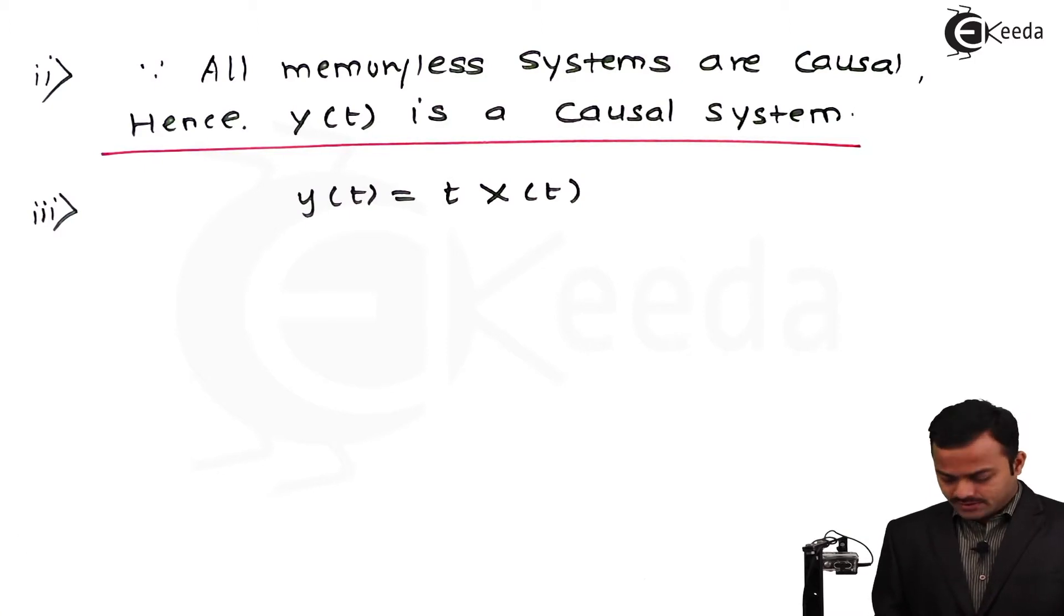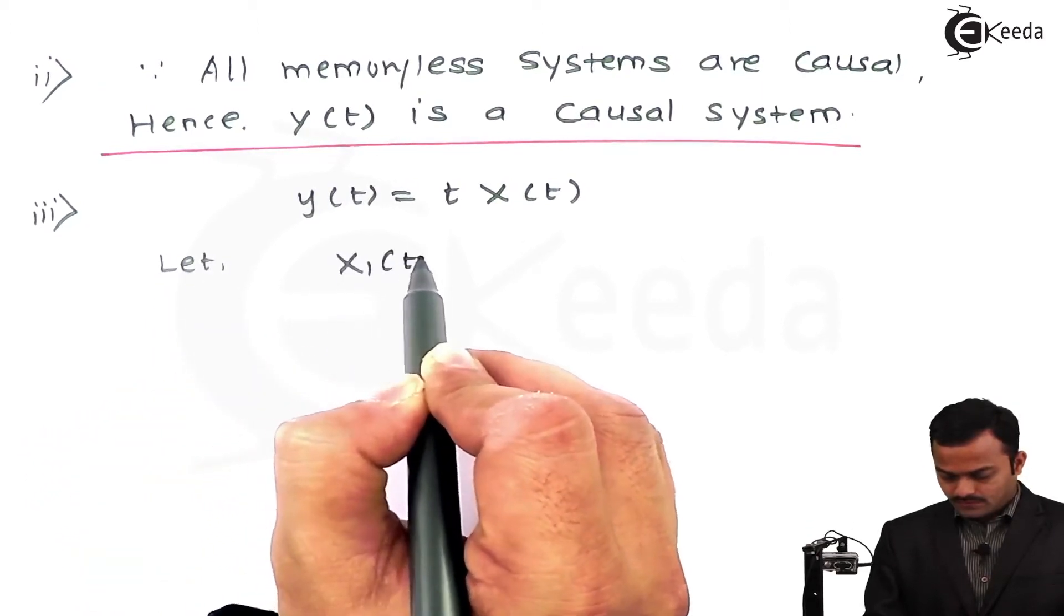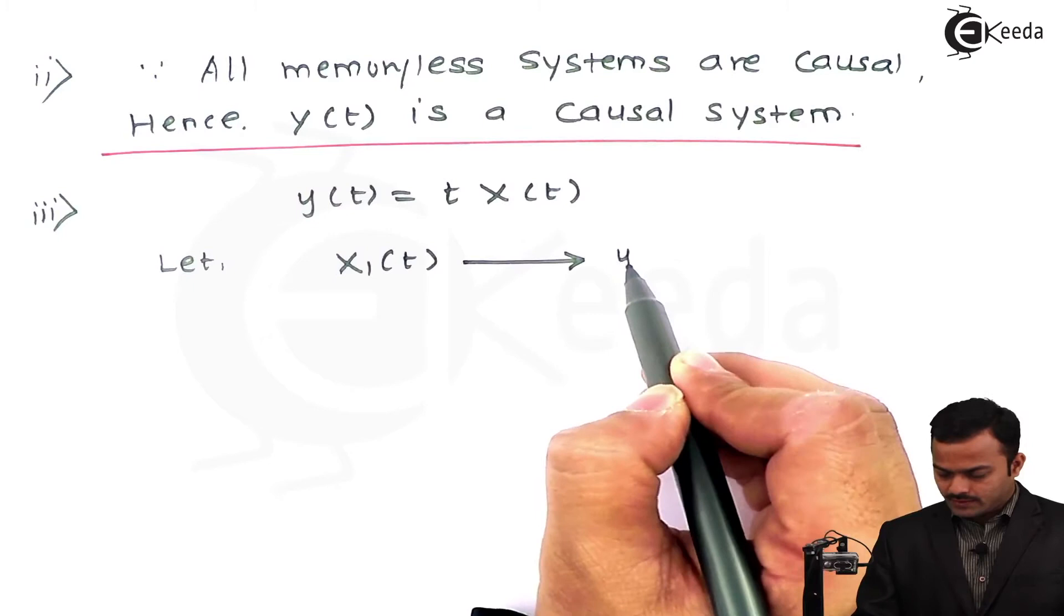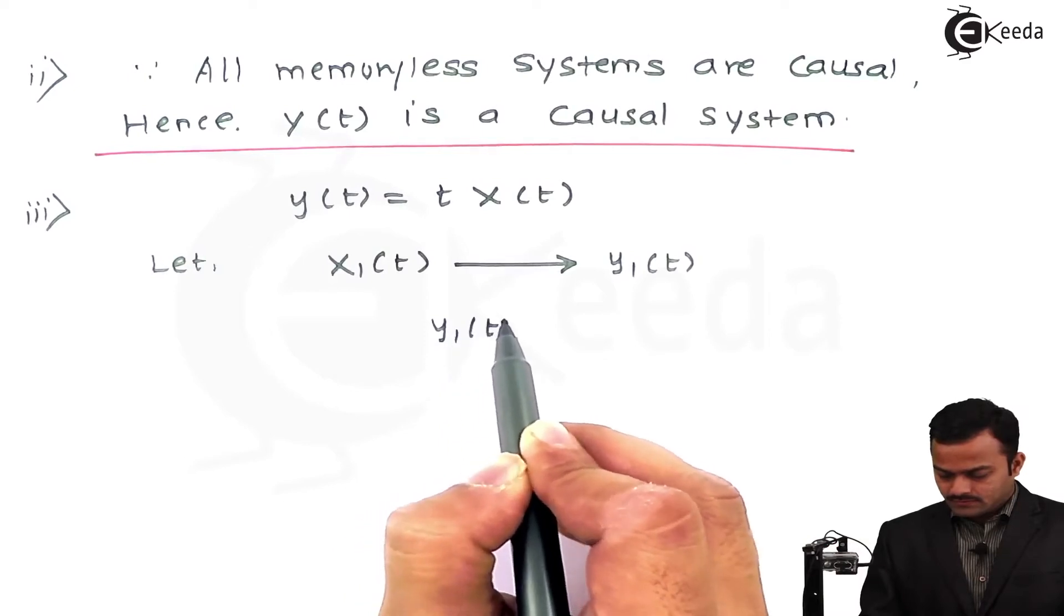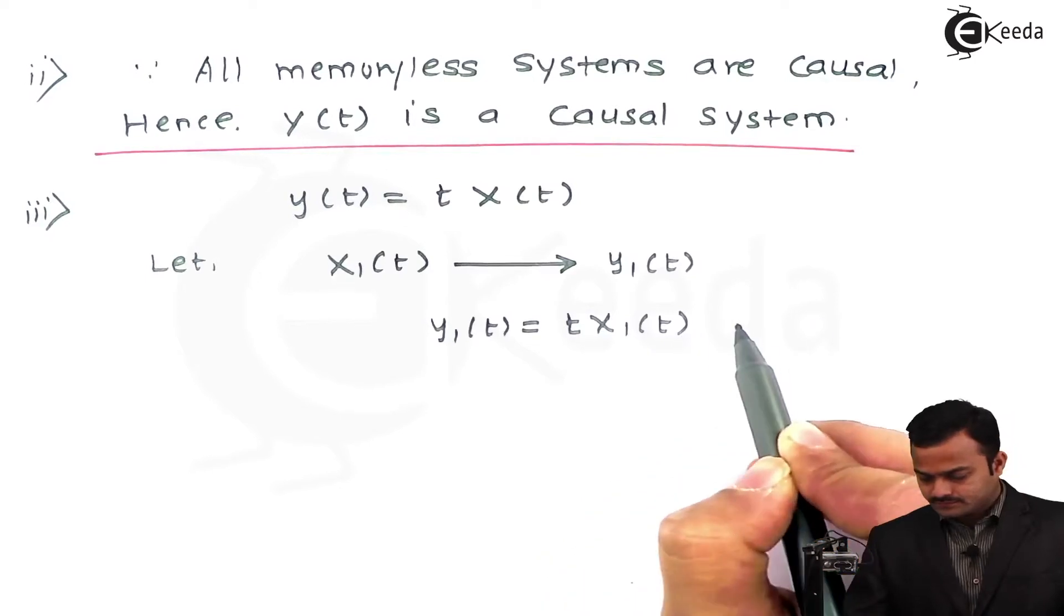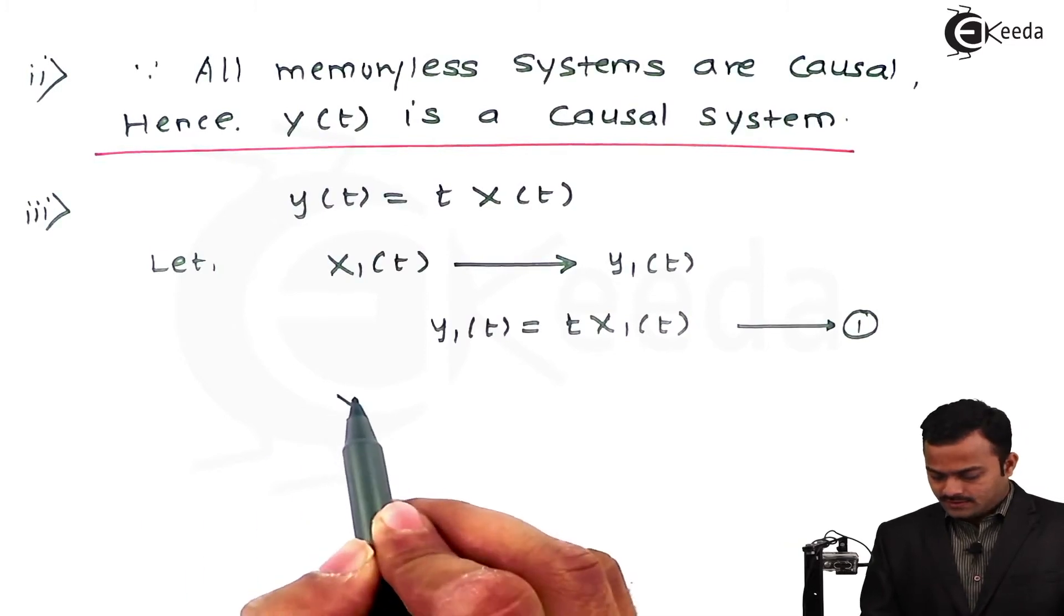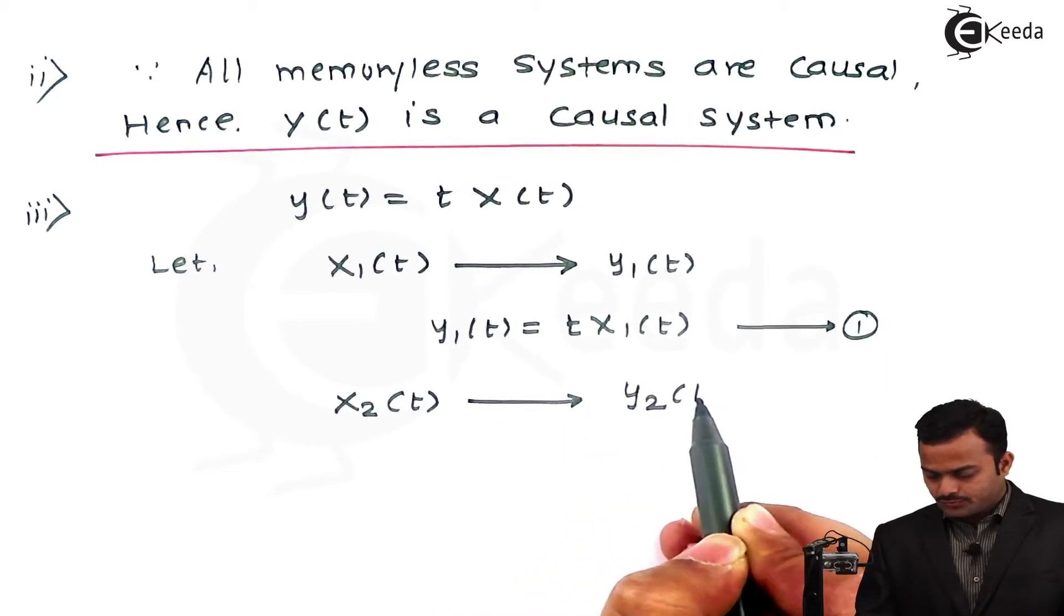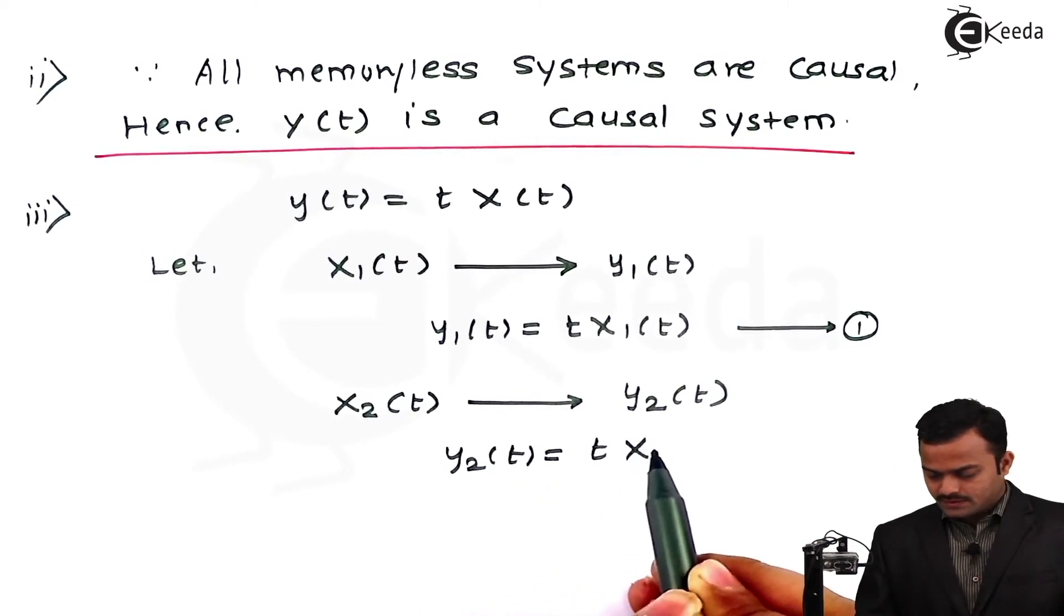Assume that there is an input signal x₁(t) which is applied to this system and output we obtain is y₁(t). And we can say y₁(t) will be nothing but simply t·x₁(t). I will get equation number 1. Similarly, I apply second input x₂(t) to get a second output y₂(t), and y₂(t) is nothing but t·x₂(t). This is equation number 2.